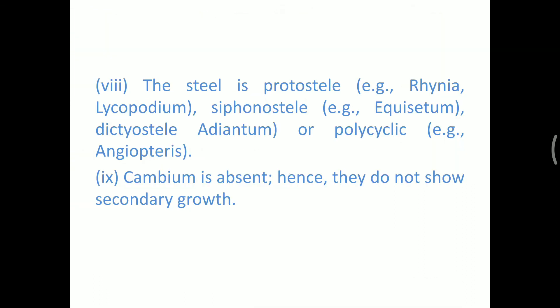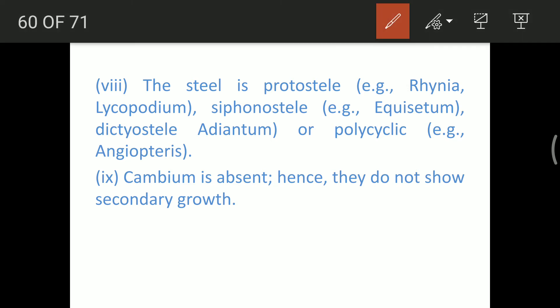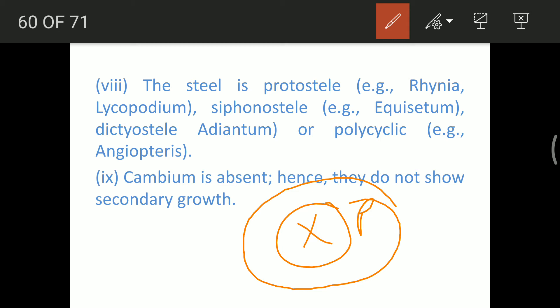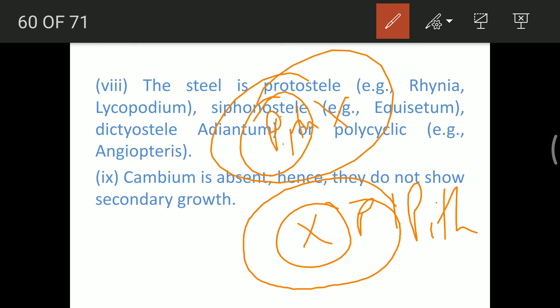The stele is prostele in case of Rhynia and Lycopodium. In prostele, xylem is present at the center surrounded by phloem, with pith or cambium at the outer end. This is the arrangement seen in most plants. Siphonostele is a more advanced form where pith is present in the center, followed by xylem, and phloem is at the outermost end.